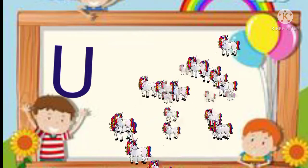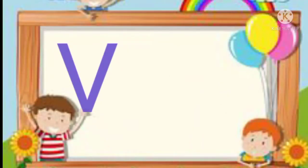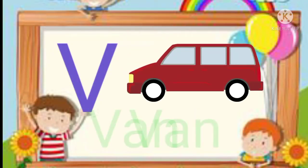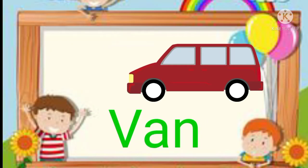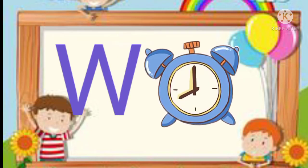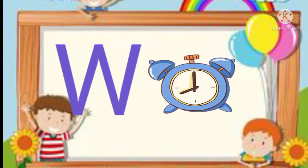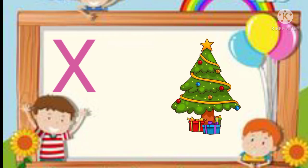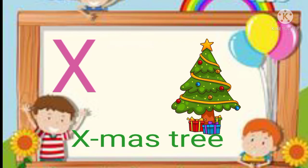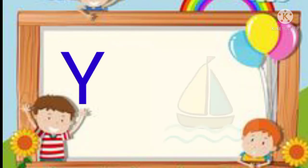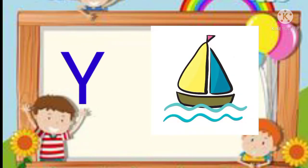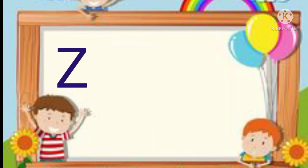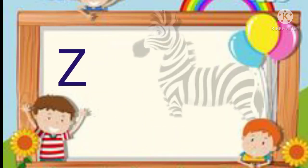U. U for unicorn. V. V for van. W. W for watch. X. X for xylophone. Y. Y for yard. Z. Z for zebra. Bye-bye.